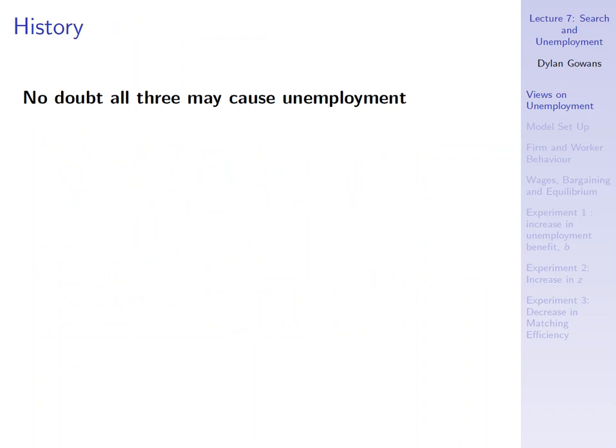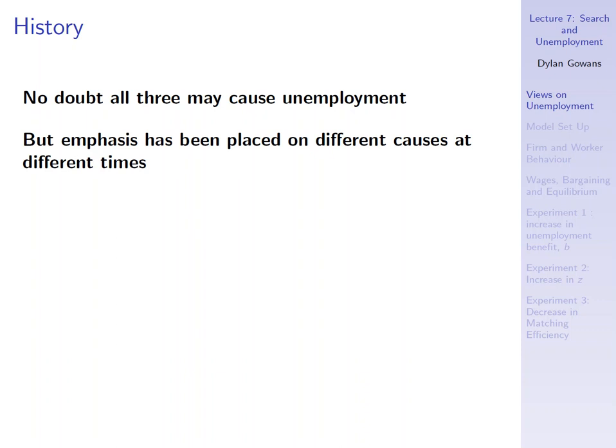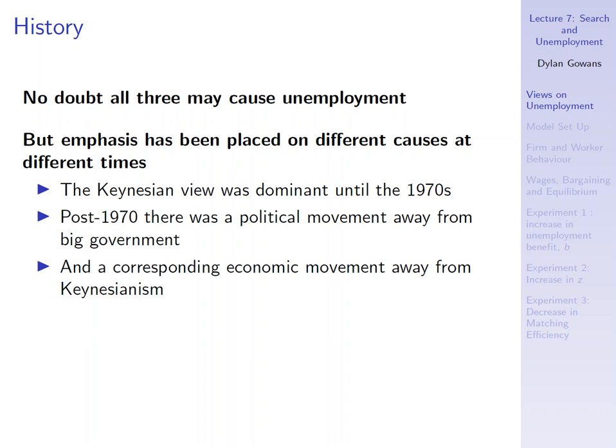No doubt all three causes contribute to unemployment: there's undoubtedly a cyclical component, a structural skills-mismatch component, and a search-friction component — obviously it takes time to look for a job. But emphasis has been placed on different causes at different times. Keynesian theories, for example, tended to place emphasis on the cyclical component: changes in unemployment caused by changes in labor demand and the market's inability to clear.